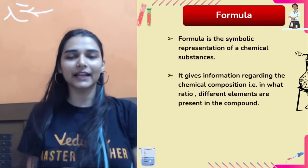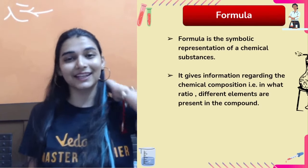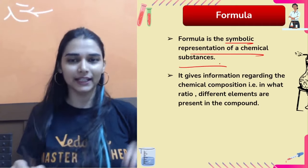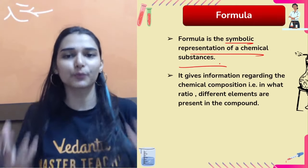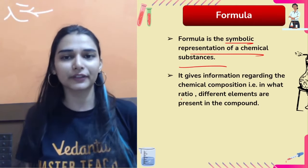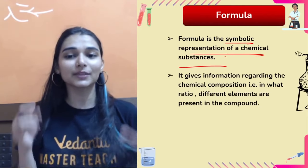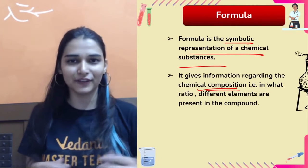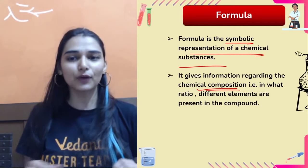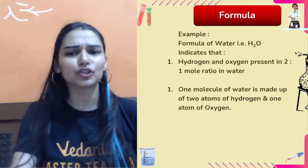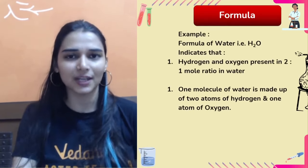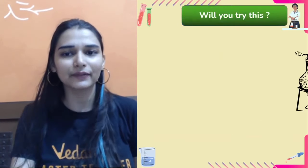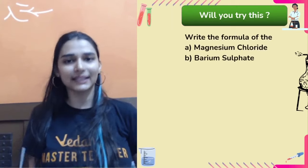Next: how do we write the formula of a compound? A formula is the symbolic representation of the chemical composition of a compound — how many different elements are present. There are simple steps: first, always satisfy valency and charges — the number of positive charges must equal negative charges. Second, always start writing with the positive valency ion first.